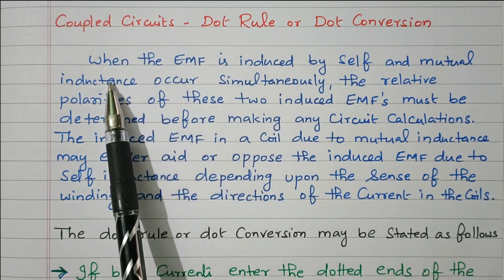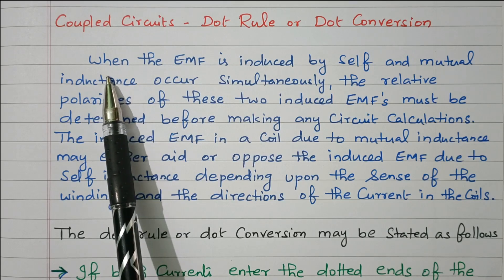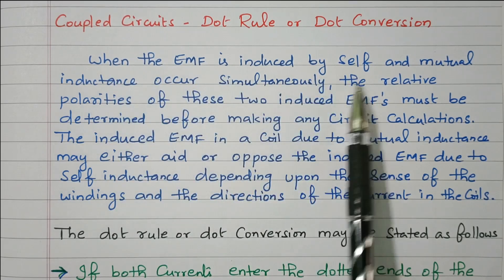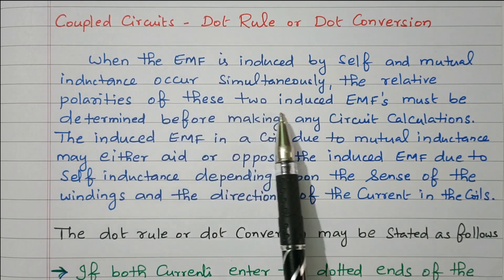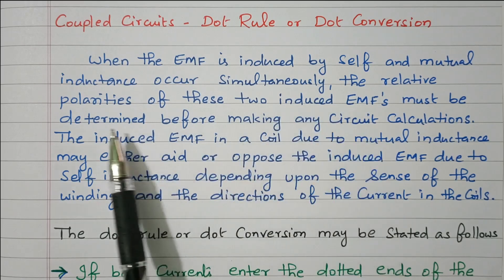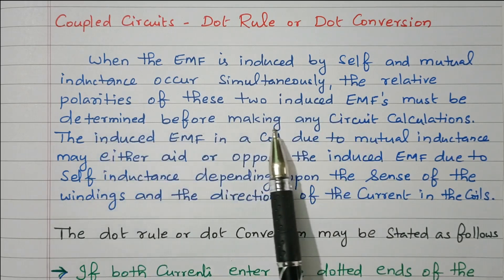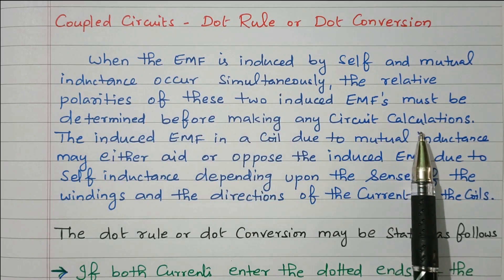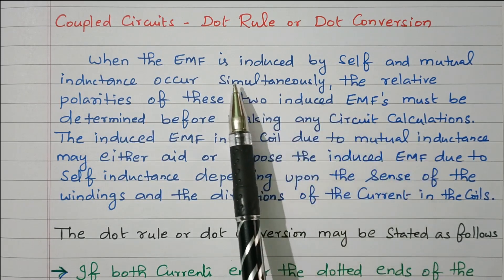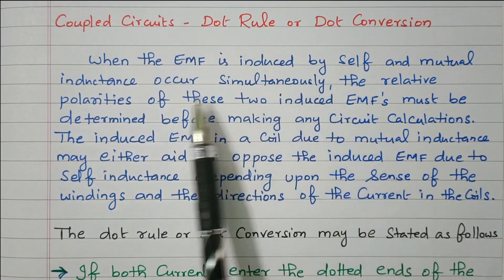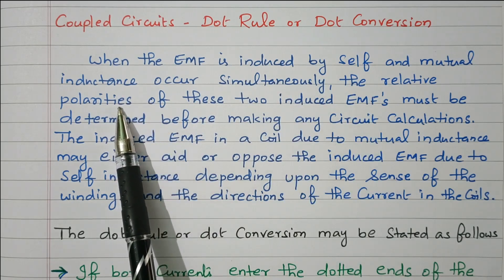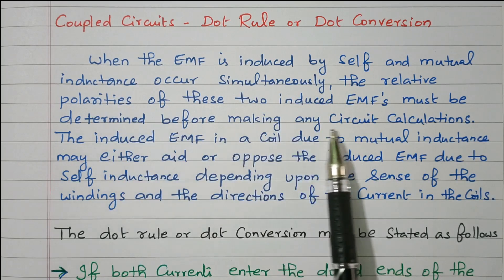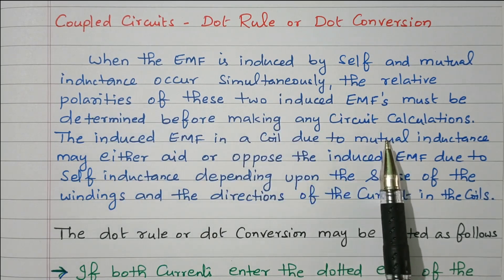First we will see why we are using the dot rule. When the EMF induced by self and mutual inductance occurs simultaneously, the relative polarity of these two induced EMFs must be determined before making any circuit calculation. So we need to determine the polarity — whether it is positive or negative — before going for any circuit calculation.